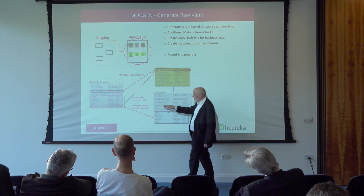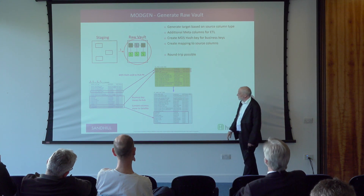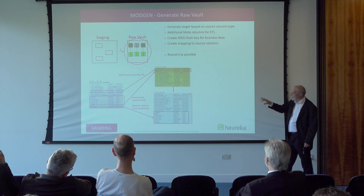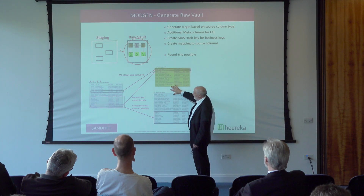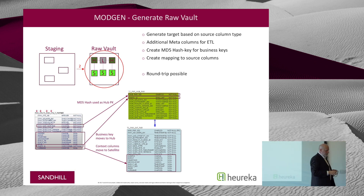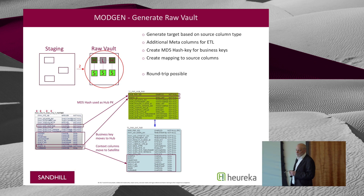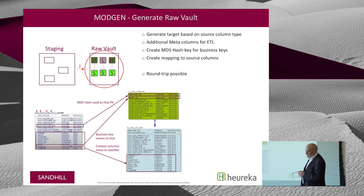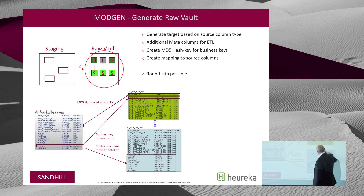Because you have all of that metadata, you could in theory go the other way — if you have your raw vault model you could move backwards and generate the staging model. The satellite handles cases where context fields change, so you keep the same parent hub but have multiple satellites for changing attributes. If one of those attributes changes its definition, that would probably come in as a new satellite. For any more information, we can set up trials and demos.